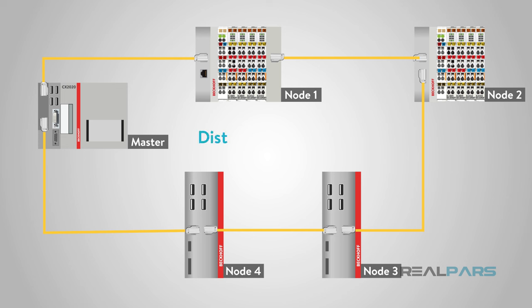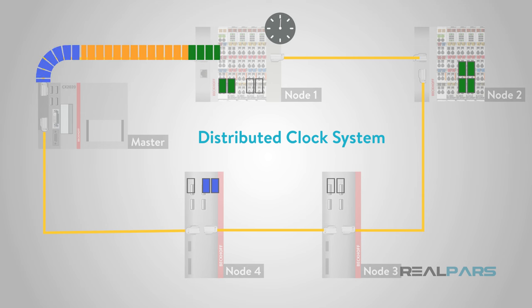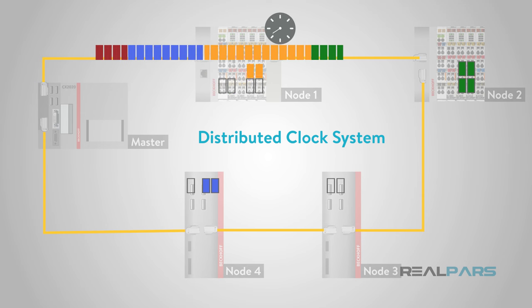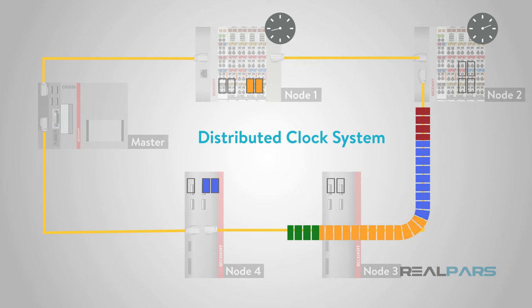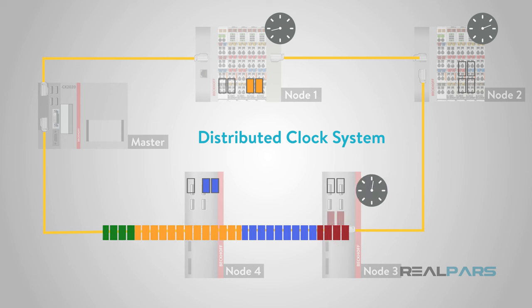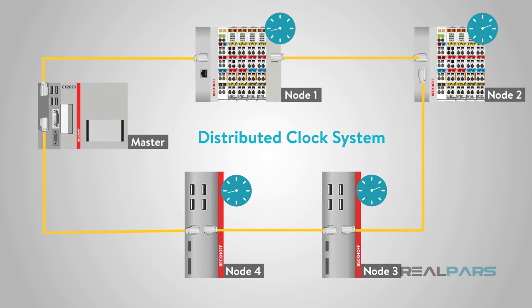EtherCAT also utilizes a distributed clock system. This method allows for low jitter without additional hardware, and it meets the synchronization requirements desired in industrial automation. As the EtherCAT frame passes through each node, the node adds a received message timestamp to its data. Each node adds the timestamp as the message is received, and then each node again attaches a timestamp as the frame moves back through the nodes on the way back to the master. The master then has an accurate delay for each node, as timestamp data is calculated with every data frame transmission.